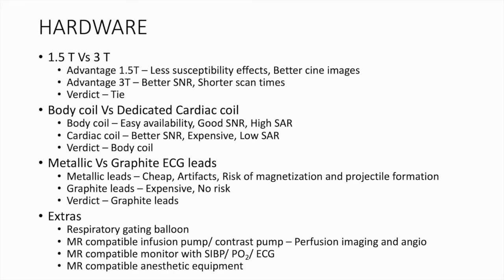When we talk about hardware, cardiac MR can be done with either a 1.5 Tesla or a 3 Tesla system. The advantage of a 1.5 Tesla system is that it has less susceptibility artifacts and produces better quality cine images. The 3 Tesla system provides better signal-to-noise ratio and shorter scan times.